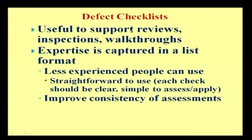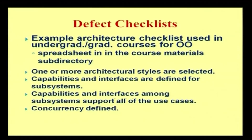As part of quality assurance, a quality checklist is used to uncover defects. It is useful to support reviews, inspections, and walkthroughs. Expertise is captured in a list format that less experienced people can use — it is straightforward, clear, and simple to assess and apply, improving the consistency of the assessment. Throughout the entire phase of the software development life cycle, we wish to maintain consistency of assessments to uncover all defects encountered. An example is the architecture checklist used in undergraduate and postgraduate courses for object orientation.